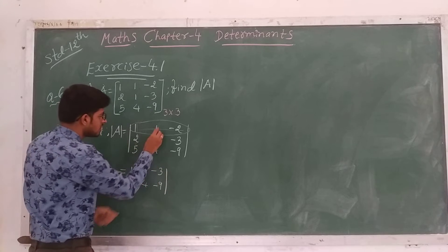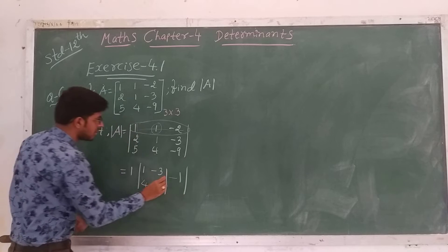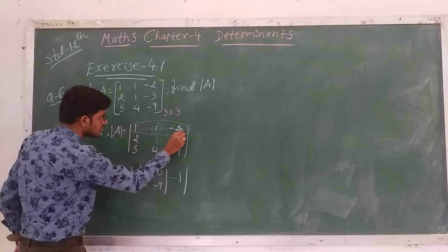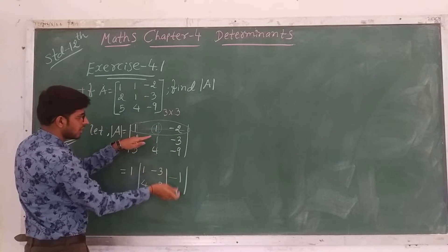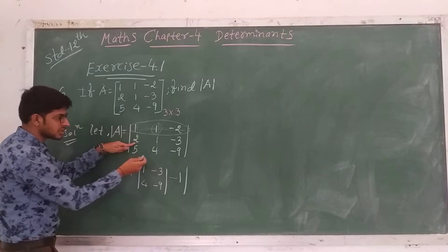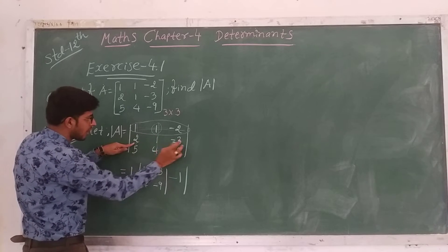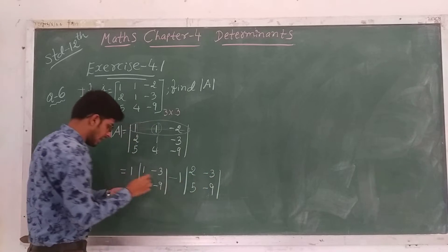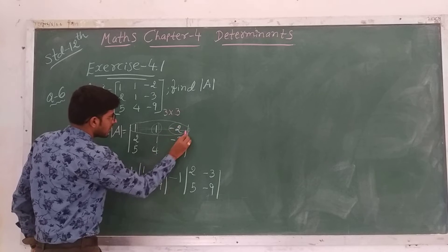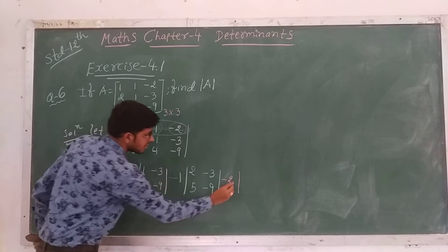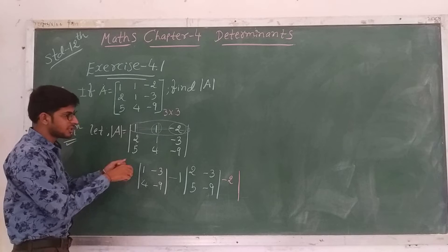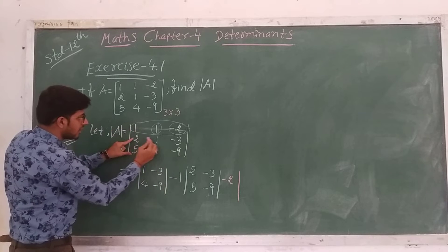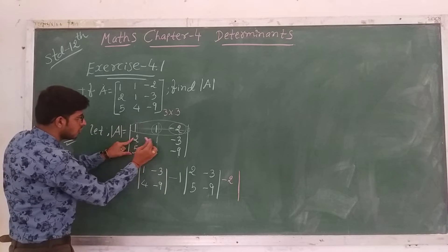Then minus of the second element. We take -1 in determinant form and remove its respective row and column — the first row and second column. Then the remaining elements for the third cofactor, removing first row and third column, give us: 2, 1, 5, 4.